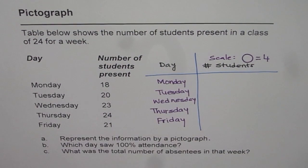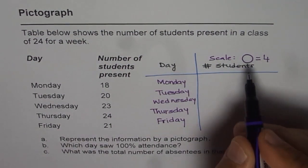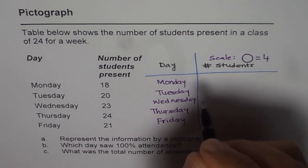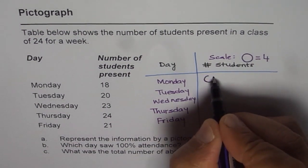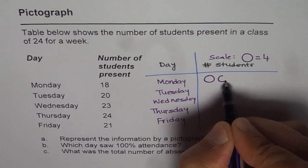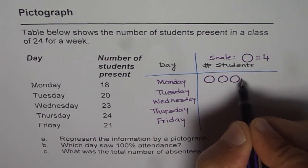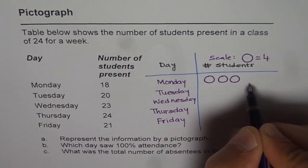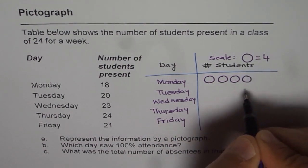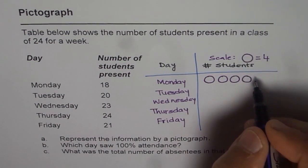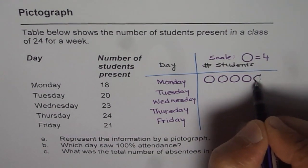Now there are 18 students present. Now if one circle says 4, then 18 means what? This is 4, one circle 4, and then one more means 8, and one more will be 12, and if I make full circle it will be 16. We need 18, 2 more. Now one circle is 4, so 2 will be half the circle. So we will make just half the circle to represent 18.